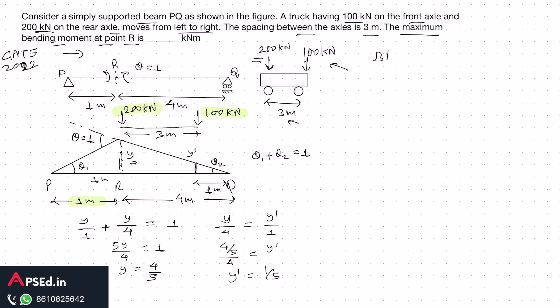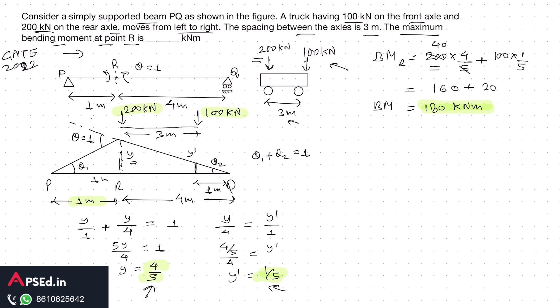Now we can calculate the bending moment at R. The ILD ordinates represent the bending moment due to a unit load, so multiplying by the actual loads: BM at R = 200 × (4/5) + 100 × (1/5) = 160 + 20 = 180 kilonewton-meters. This is the required maximum bending moment at point R.